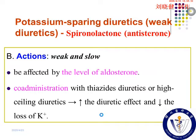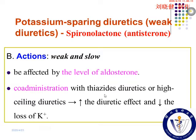Its diuretic effect is weak and slow because it is a competitive antagonist of the aldosterone receptor, so its diuretic effect is affected by the level of aldosterone in the body. Because of its potassium-sparing diuretic effects, spironolactone is usually used in combination with thiazide diuretics and loop diuretics. The result is they enhance the diuretic effects and decrease the loss of potassium ions.